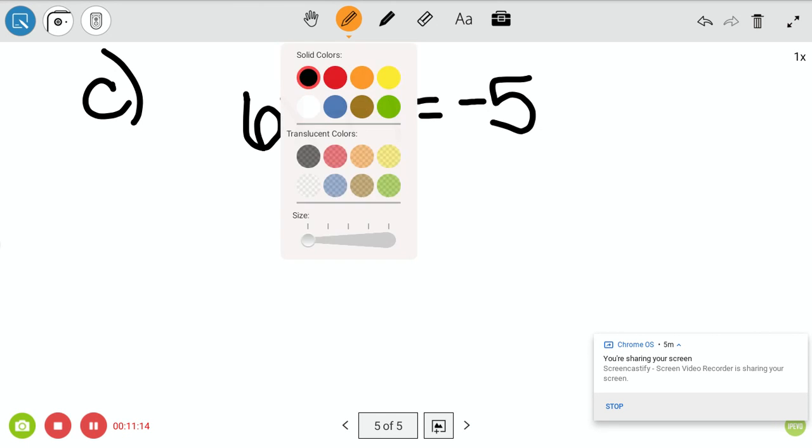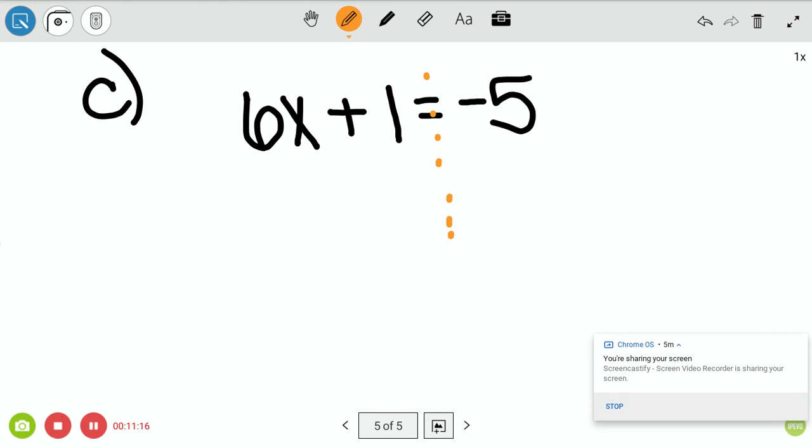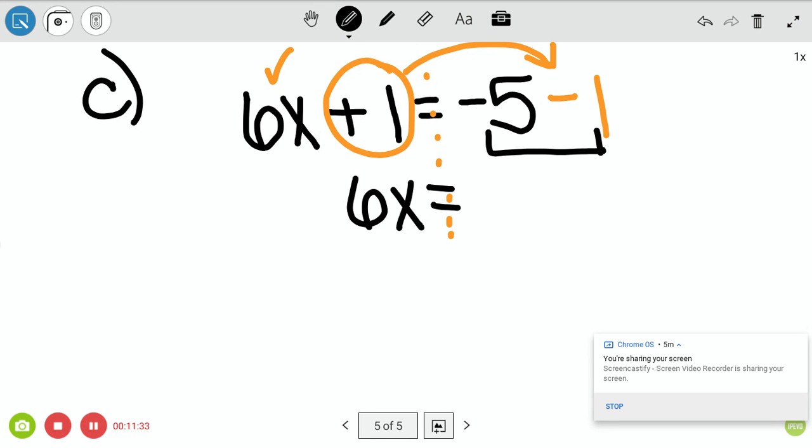Alright, so we've got a barrier. Alright, we like variables on the left. That's good. But we don't like a positive 1 over here. If I want to move it over, I make it a negative 1. If it changes sides, it changes signs.